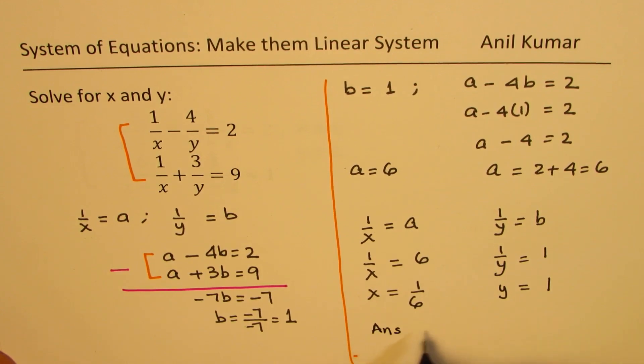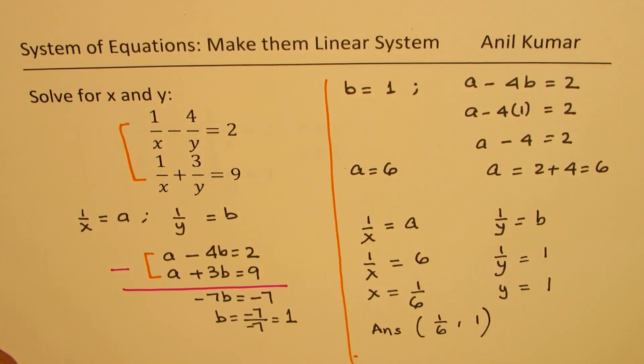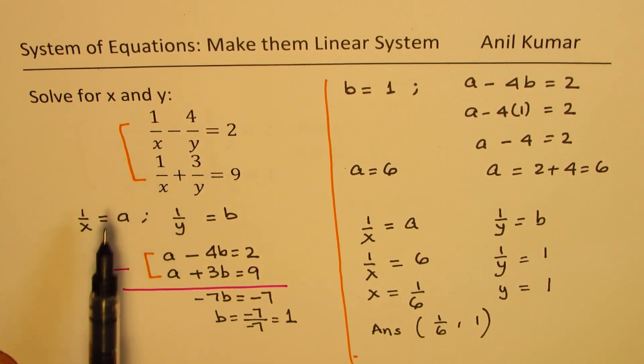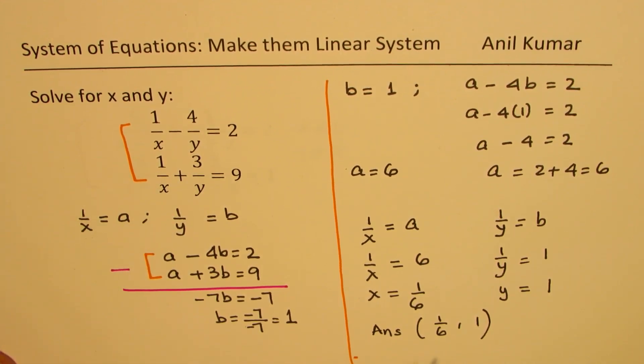And therefore, our answer here is 1 over 6, 1. That becomes the coordinate point as an intersection of these two curves, which are not linear. But you can see with this strategy, we made them linear and then solved like a linear system of equations.